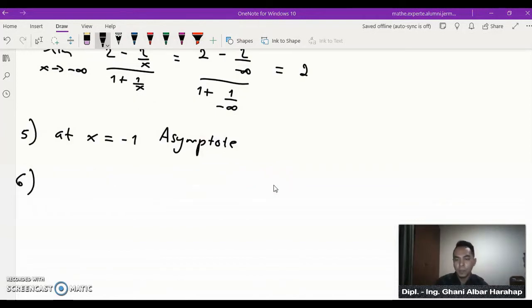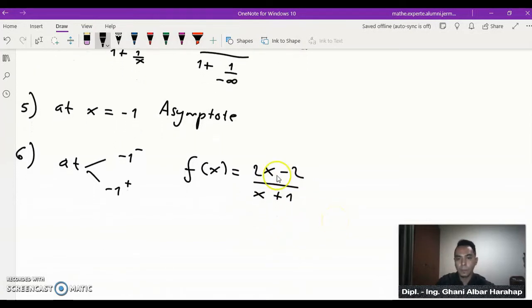at x equal to minus 1, we have an asymptote. So the next thing we need to consider is how your graph behaves slightly left and next to your asymptote point. So I would say at minus 1 minus and minus 1 plus, or left to your minus 1 and on the right side of your minus 1. So let me write once again the function.